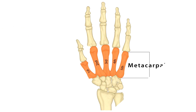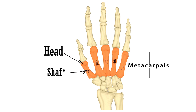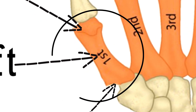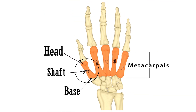Let's have a look at these bones. As you can see, this is the head of the metacarpals, placed distally. This is the shaft. And this is the base of the metacarpal, placed proximally. The first metacarpal is the shortest of them all.